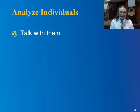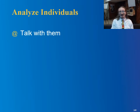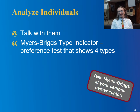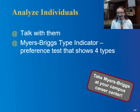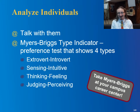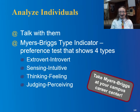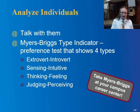How do you analyze individuals? First, just talk to them — common sense. If you want to get more scientific about it, you can use the Myers-Briggs Type Indicator preference test. This is where concepts like extroverted versus introverted come from — along with sensing versus intuitive, thinking versus feeling, and judging versus perceiving. If you've taken the test, I'd love to know your result and whether it matches your experience.